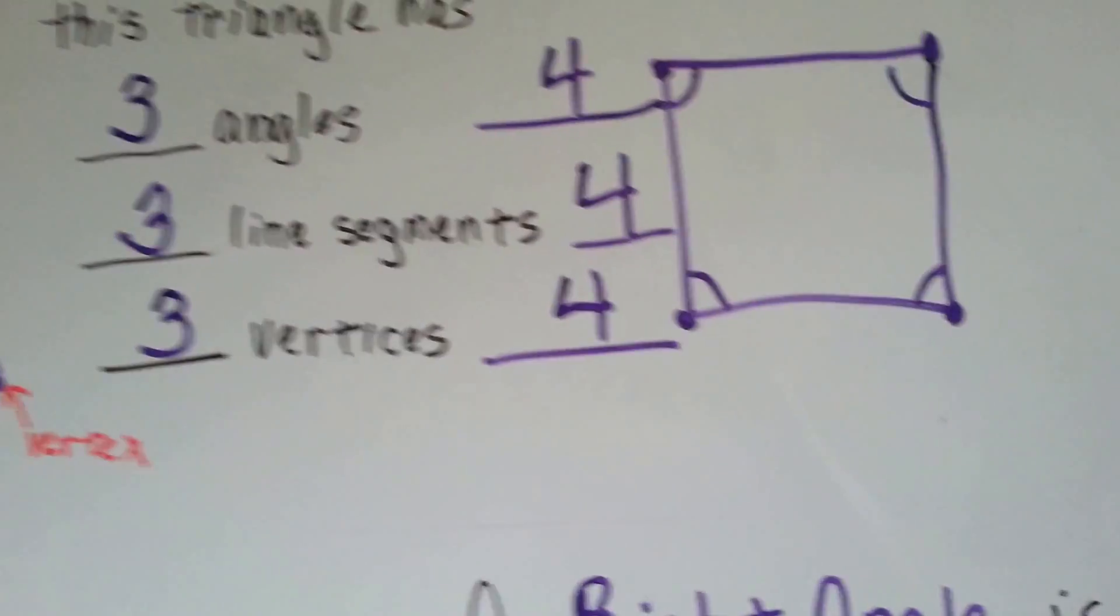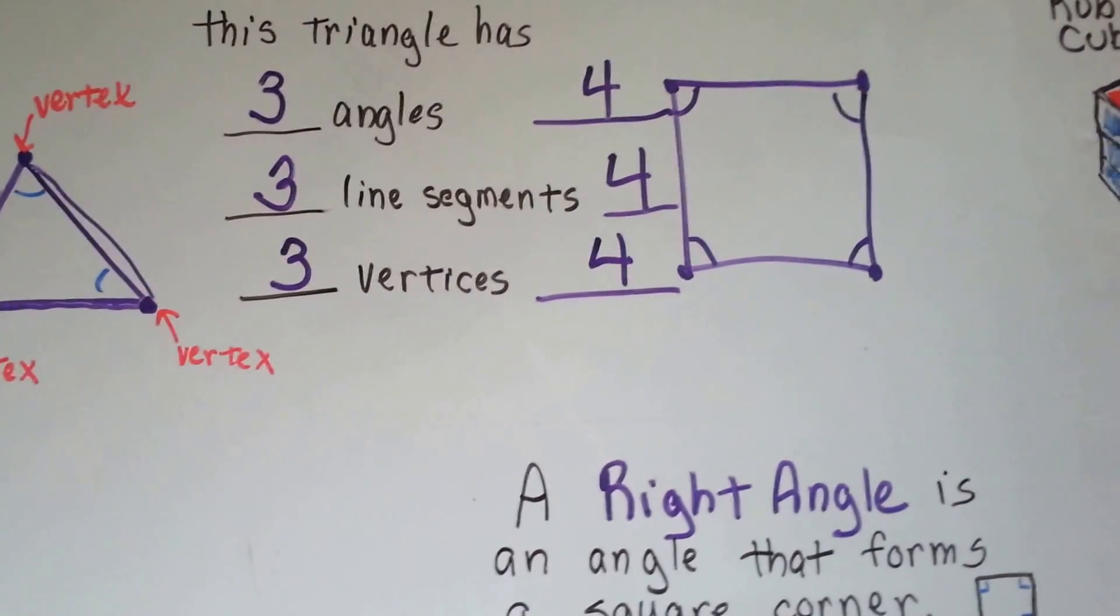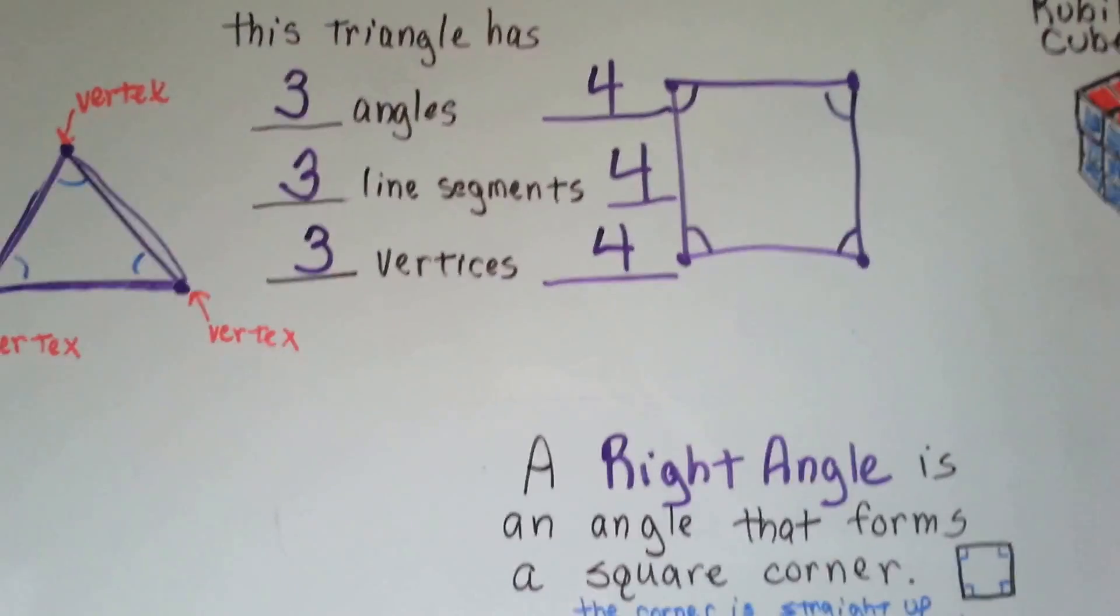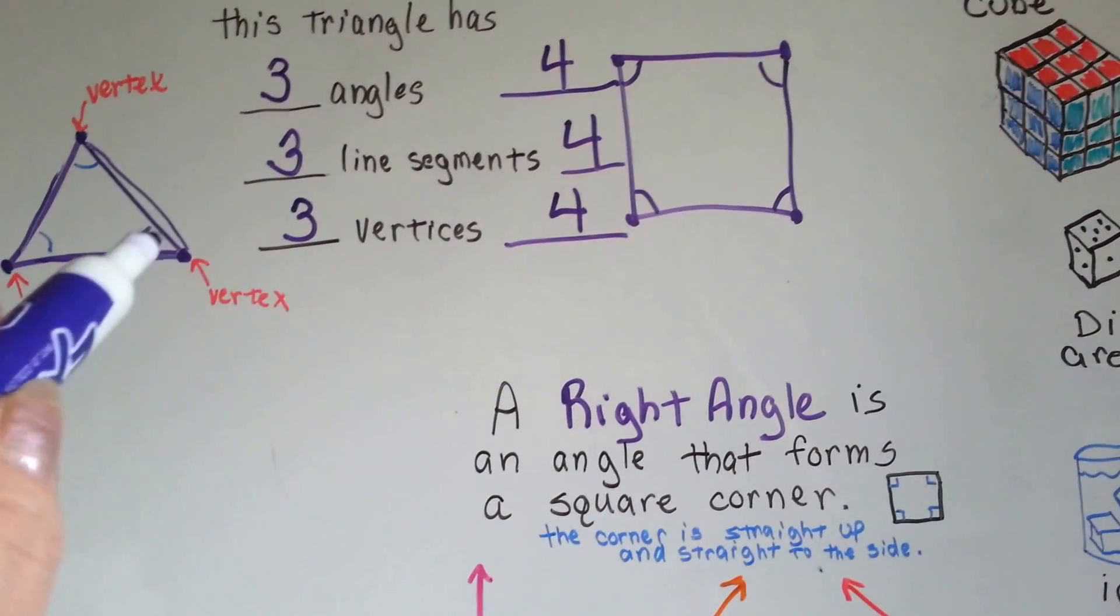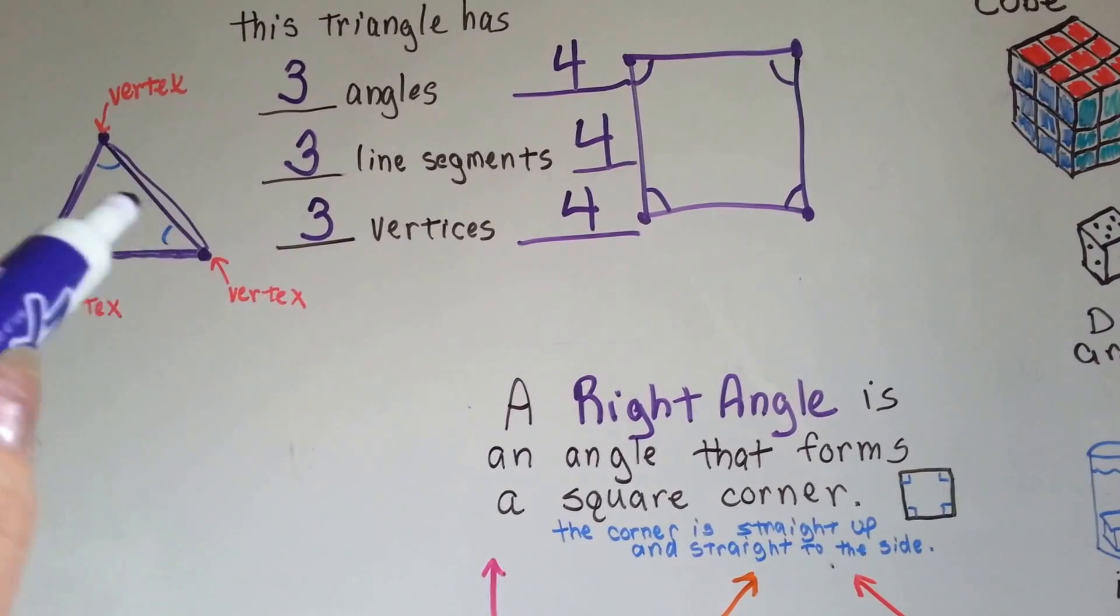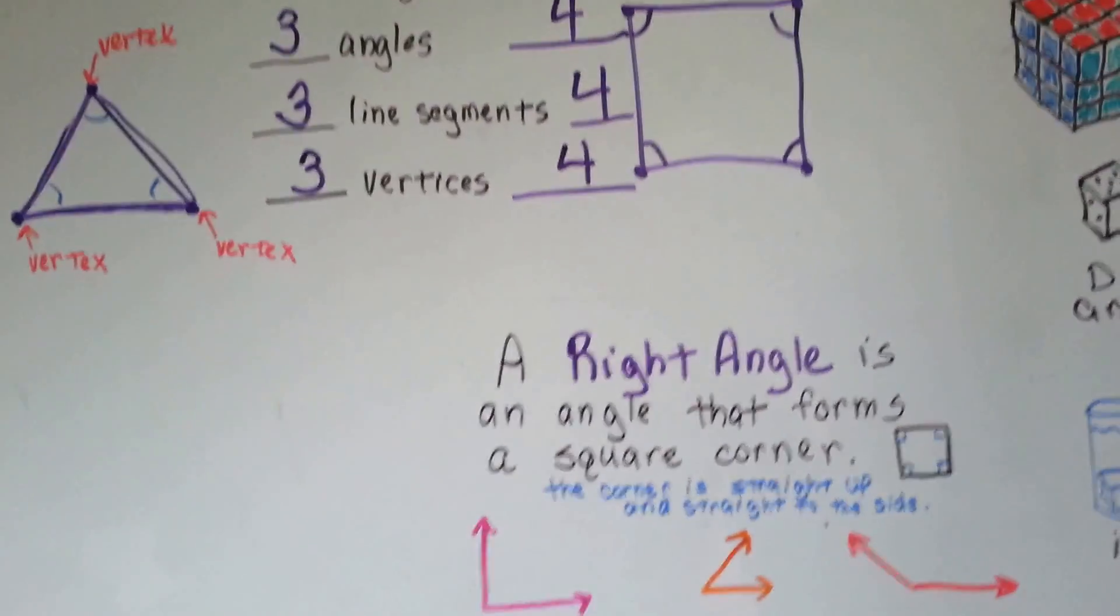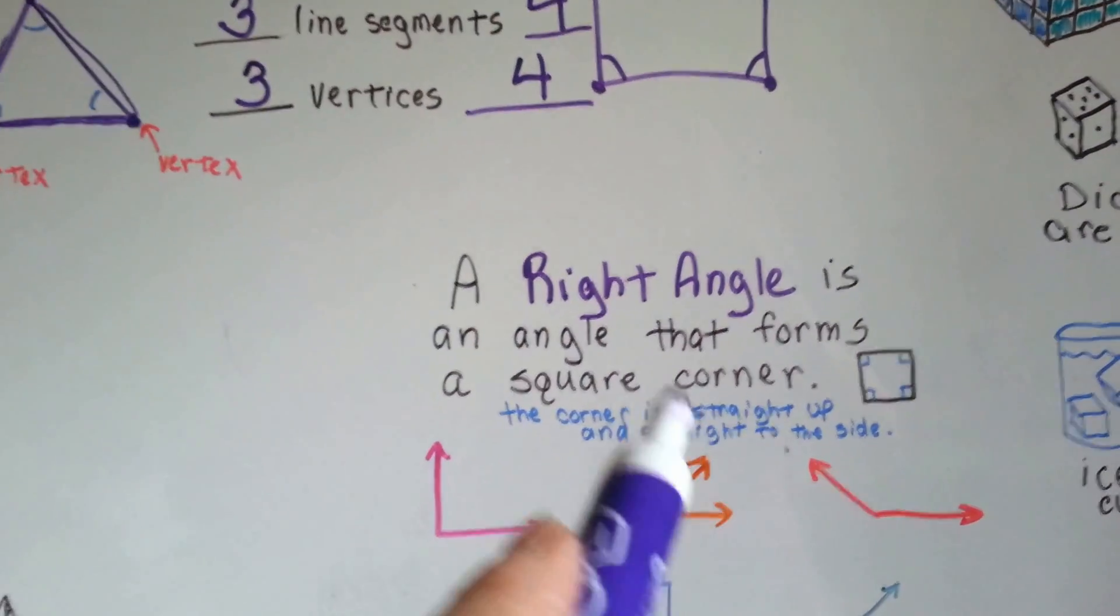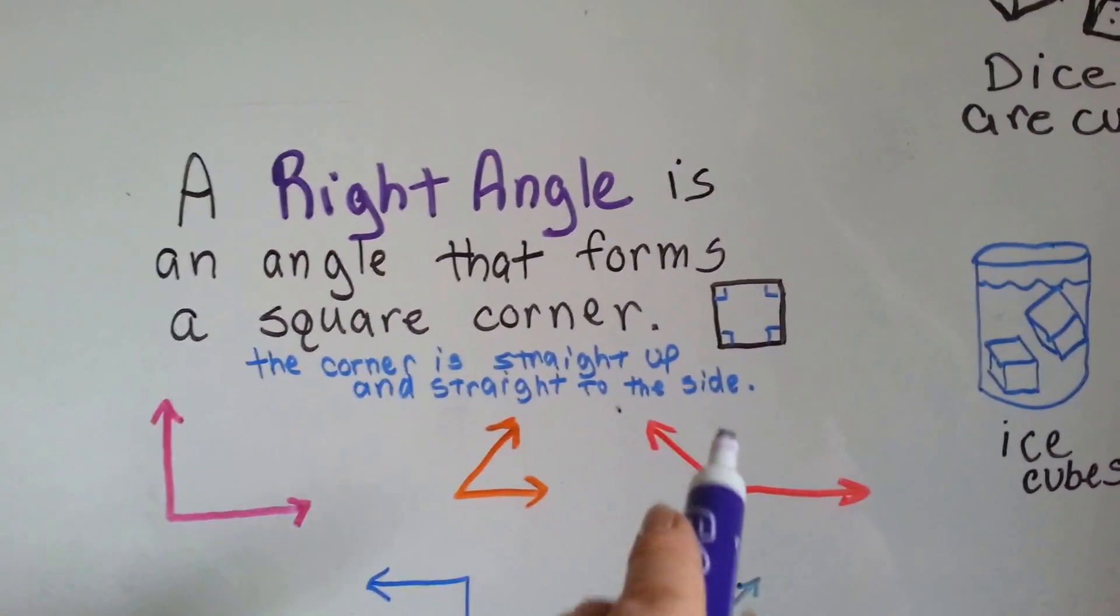So a triangle has three of these, a square has four of them. Well, a triangle has three sides, and a square has four sides. Now look at the corners of this square compared to the corners of this triangle. See how the corner of the triangle is sort of closed compared to the corner of the square? Well, the square has got what's called a right angle, and it forms at the square's corner.